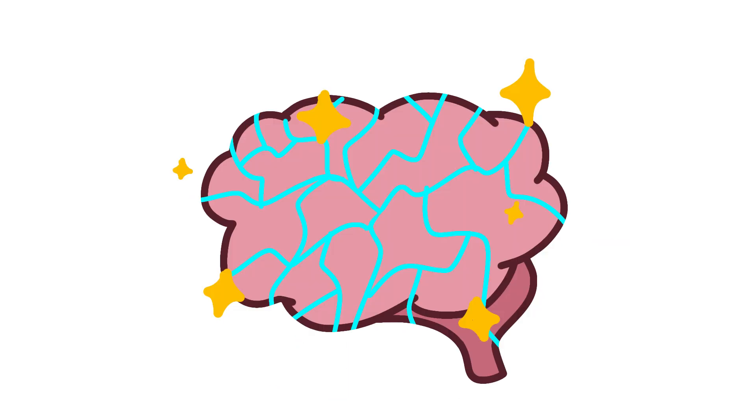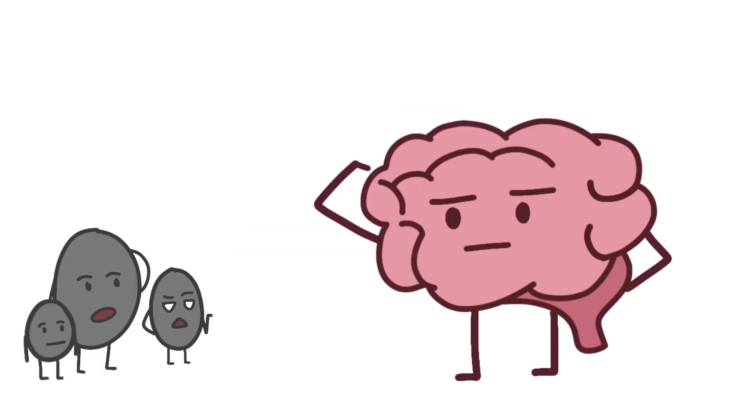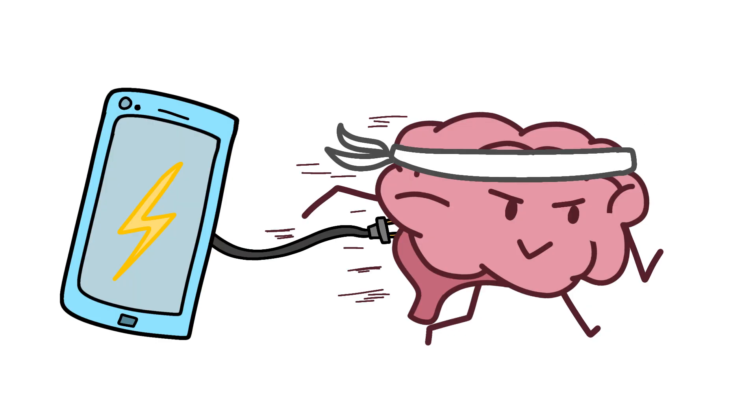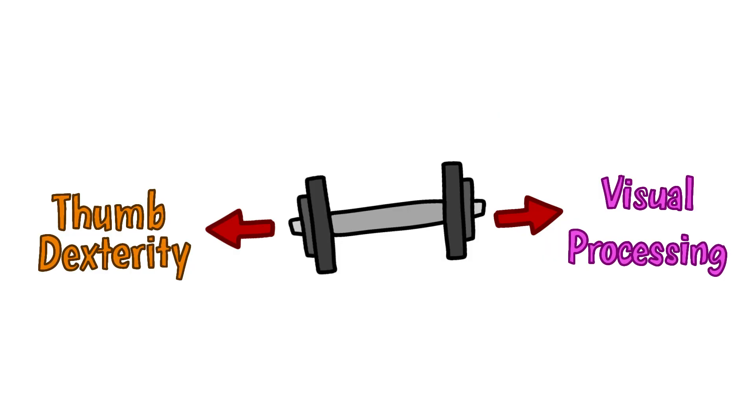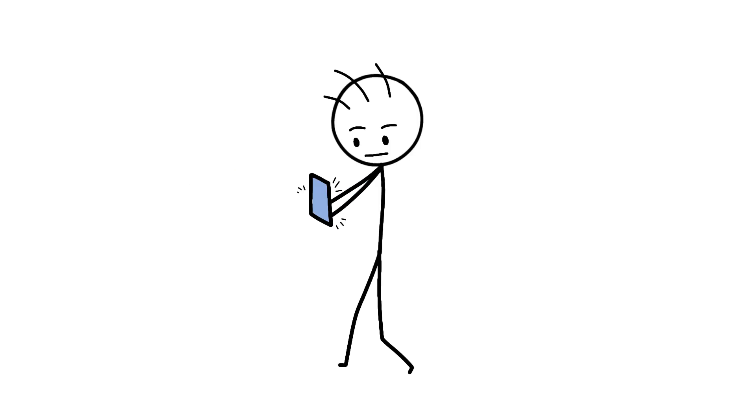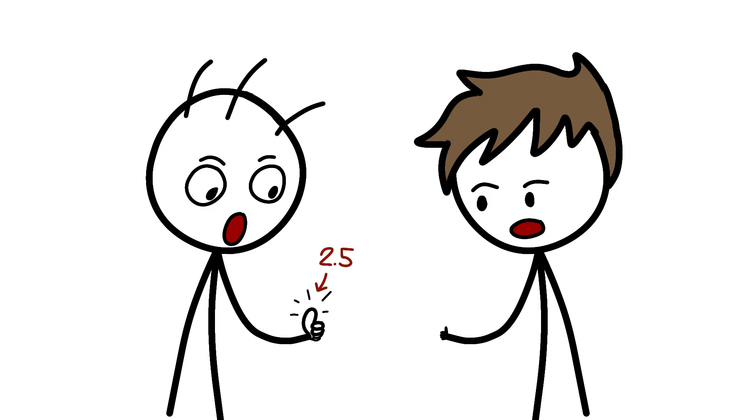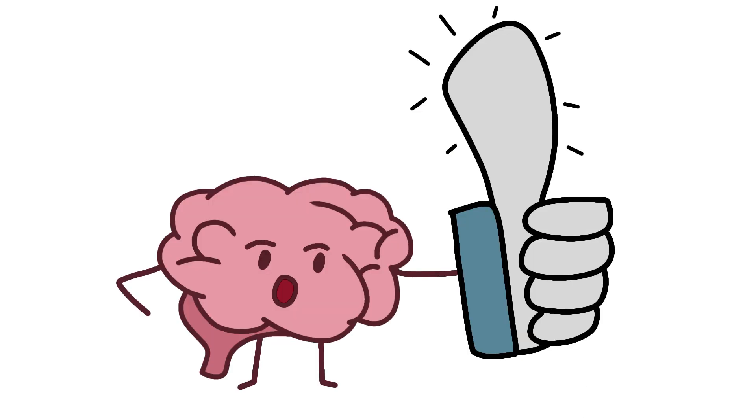Your brain Marie Kondos itself, keeping neural pathways that get used frequently, and thanking the others for their service before yeeting them into the void. Smartphone use accelerates pruning in areas related to impulse control while strengthening areas related to thumb dexterity and visual processing. One researcher found that teenagers who text frequently have motor cortex representations of their thumbs that are 2.5 times larger than non-texters. They're evolving super thumbs, neurologically speaking.